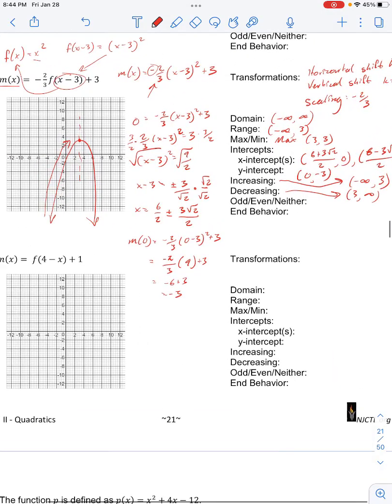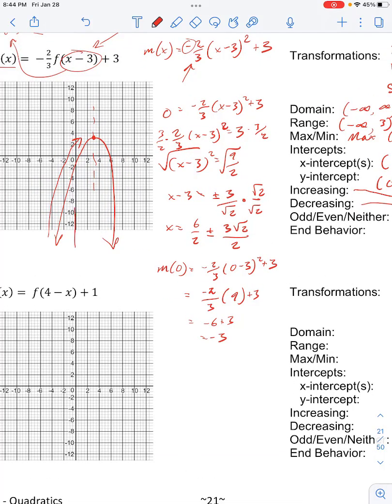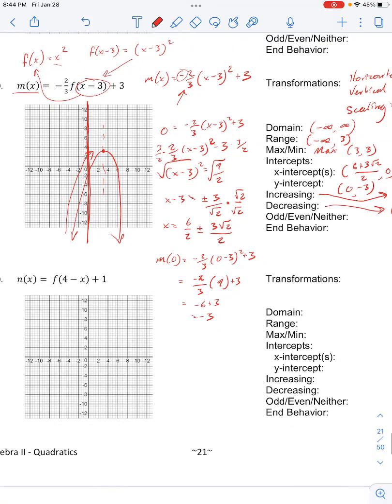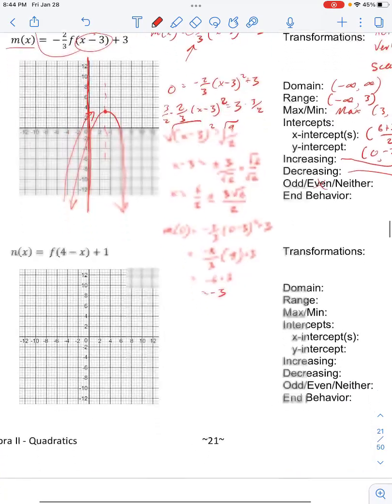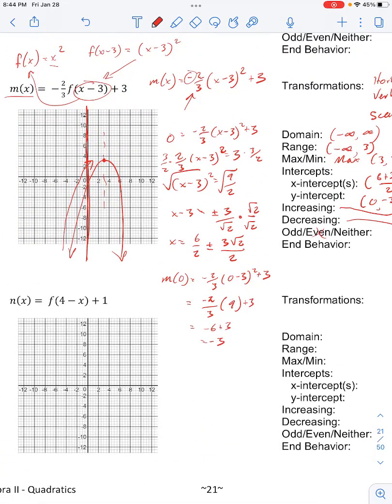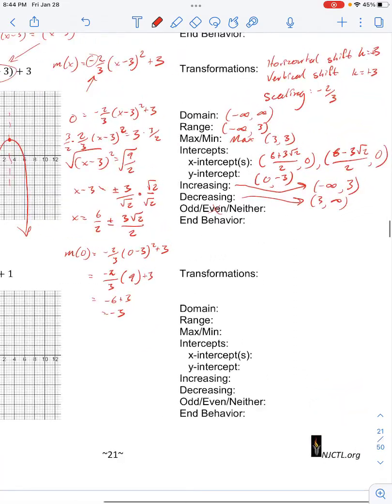Now, we're looking at odd, even, or neither. We're looking for any symmetry across the y-axis. And clearly, if we see, if we reflect this, we wouldn't get the same image, so it is not even. Now, if you rotate this 180 degrees about the origin, we would get a parabola over here that opens this way. Of course, not the same image, so it is not odd. So this function is neither.